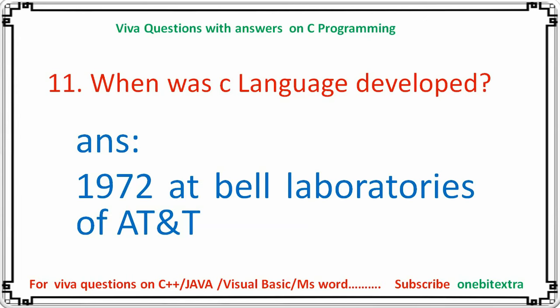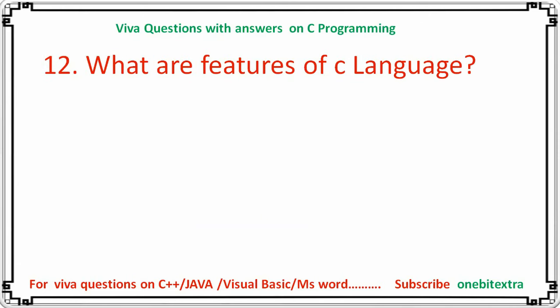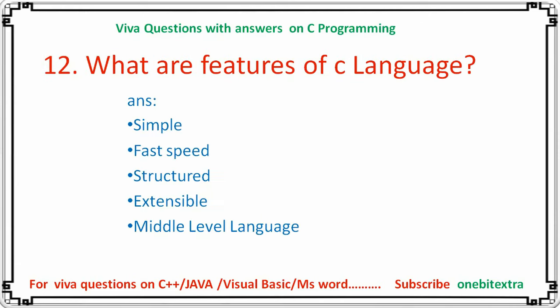Next question: when was C language developed? The answer is 1972, at Bell Laboratories of AT&T. Next question: what are the features of C language? It is simple, it has fast speed, it is structured, it is extensible, and it is a middle-level language.